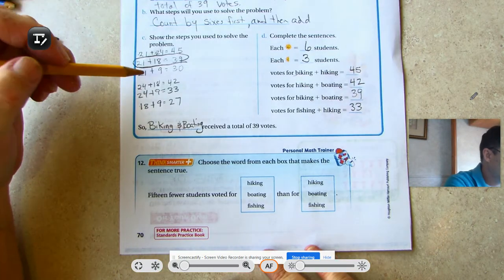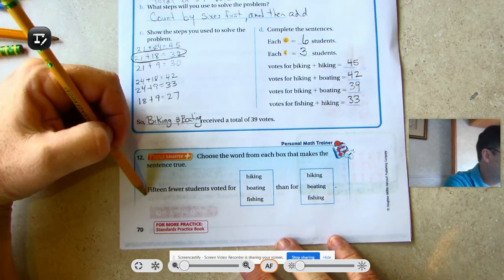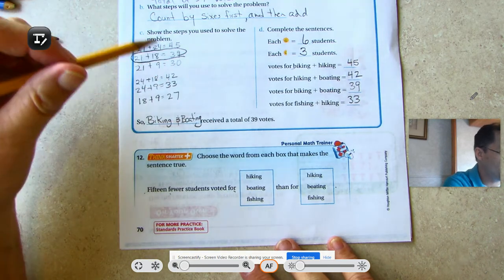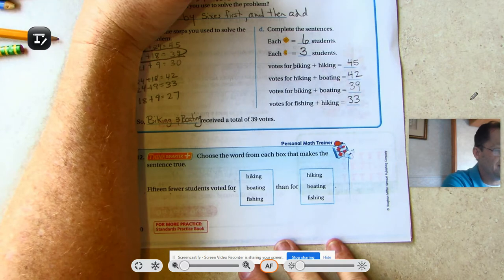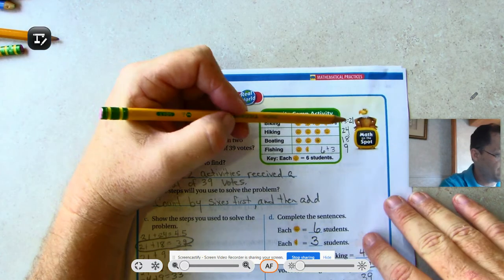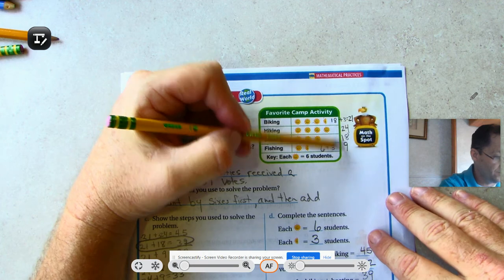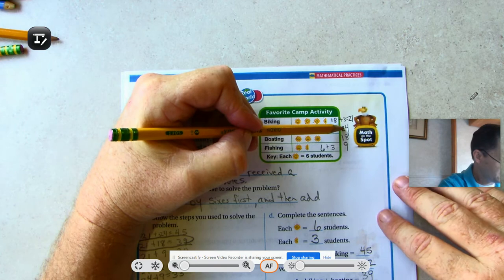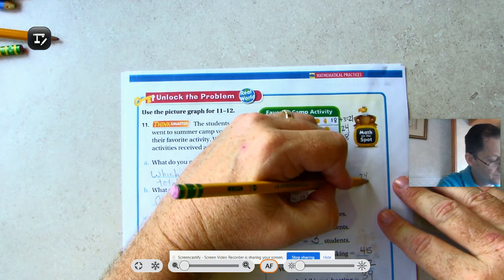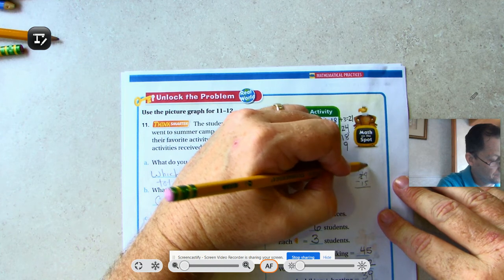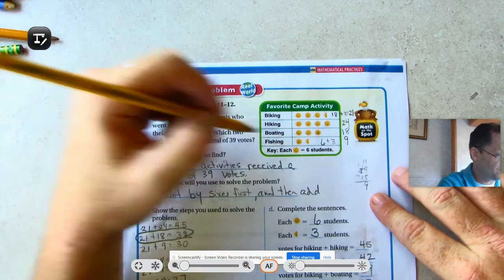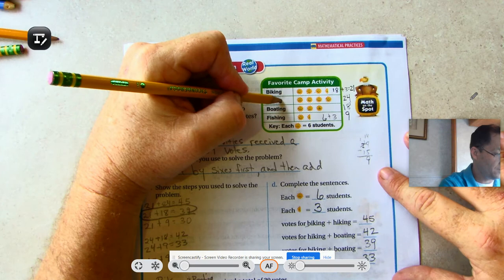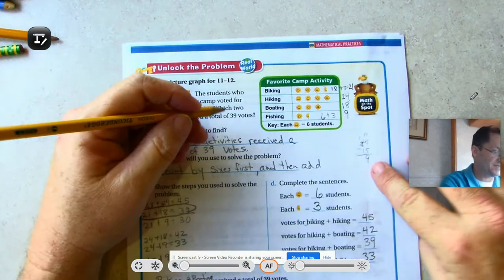Choose the word from each box that makes the sentence true: 15 fewer students voted for blank than for blank. If I take 15 from 21, that would be 6, but there's no 6 up there. Fishing was 24. Fishing was 9. And that gives me a difference of 15.